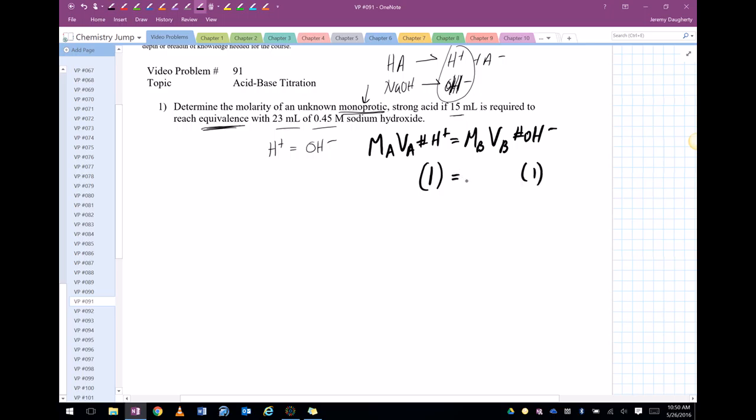What's the molarity of the base? 0.45. What's the volume of the base? 23 milliliters. What's the volume of the acid? 15 milliliters. We don't know the molarity of the acid. So here you can see we can easily solve this. So I get 0.69 molar.